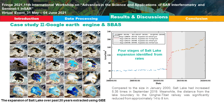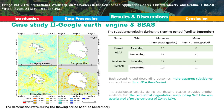For Case Study 2, the area of Salt Lake had increased 5.35 times in September 2019 compared to January 2000. Meanwhile, the distance from the lake boundary to the Qinghai-Tibet Railway was significantly reduced from approximately 14 km to 8 km.